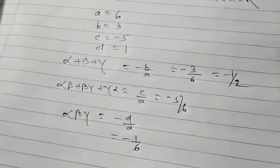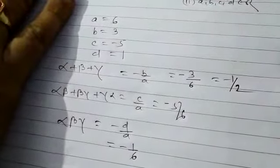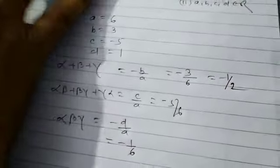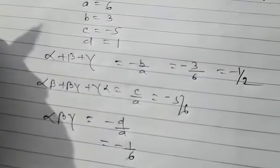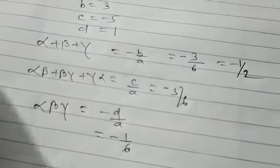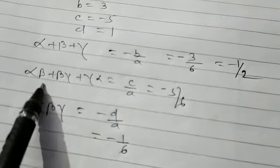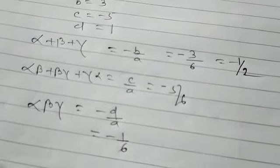So, how will you solve this problem? By comparing the coefficient from the general equation, we just determined the value of a, b, c, and d. And also, we have got the value of alpha plus beta plus gamma, alpha beta plus beta gamma plus gamma alpha, and alpha beta gamma.